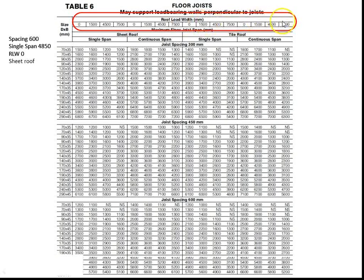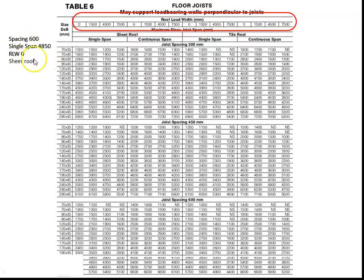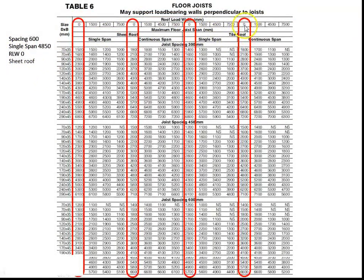At the very top of the table there are figures along here which represent our roof load width. The issue is these numbers are repeated throughout depending on a few other things we'll look at in a moment. In our example, we have no roof load width coming down on this joist, which is very common — most of the time floor joists don't take the roof. So there are several zero columns, and we need to know which one to choose from.